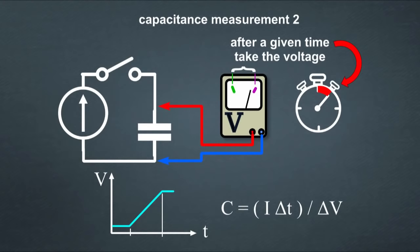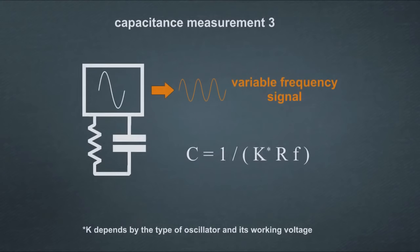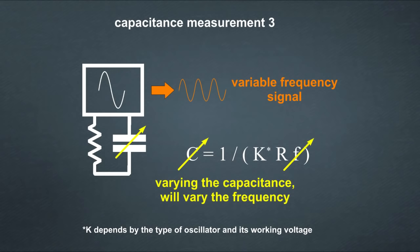A similar method is to look at the voltage the capacitor reaches in a fixed amount of time. And the last method is to look at the frequency of an oscillator, which oscillates by means of a resistor and a capacitor, where the capacitor is the unit under test.